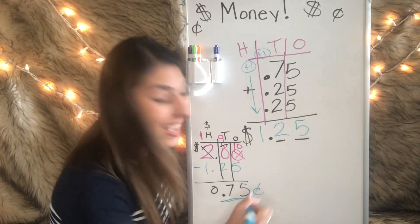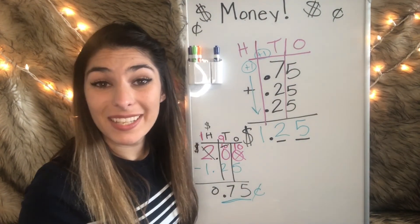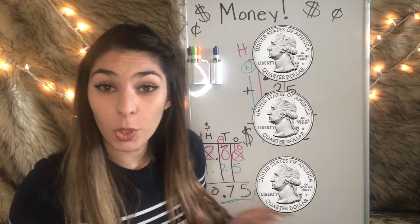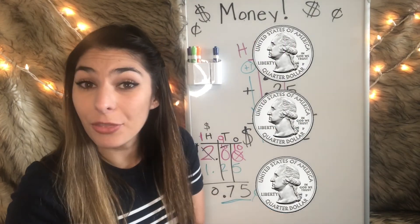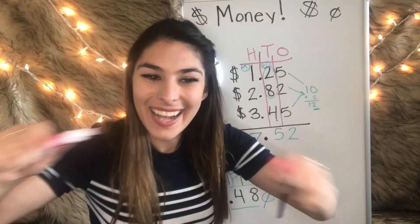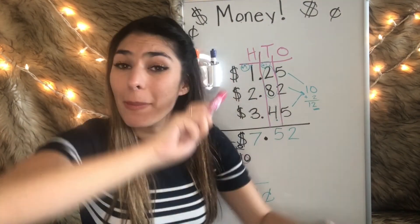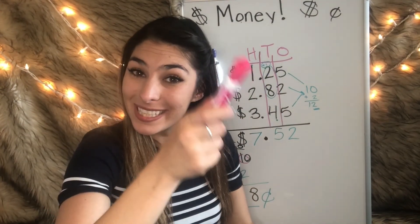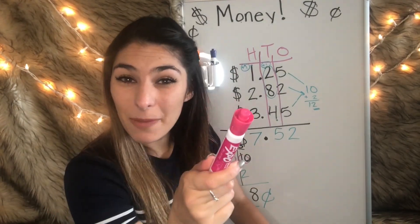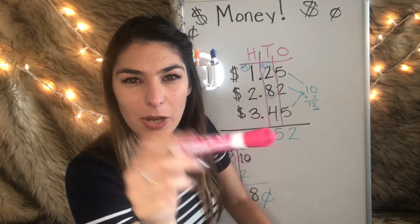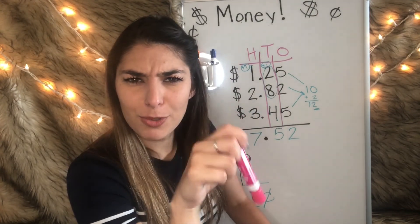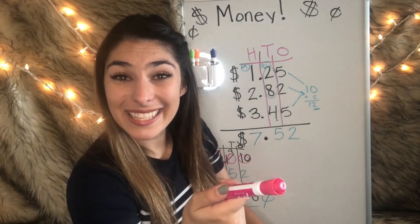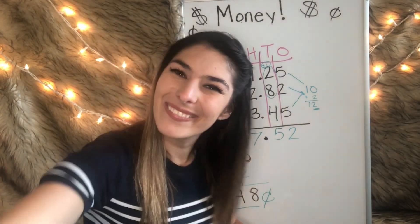So the cashier owes us 75 cents, which the quickest way would be three quarters. Those are all my money tips for today. Give this video a big thumbs up if it helped you out. Don't forget to subscribe and I'll see you guys in the next video. Bye guys!